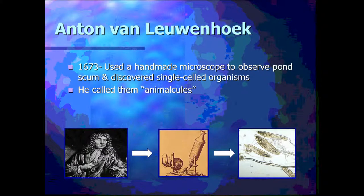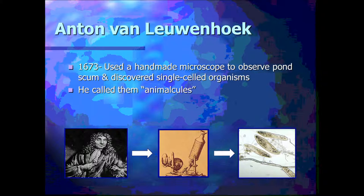The next person is Anton van Leeuwenhoek. The way I remember him is that his last name starts with an L, and I pair it with the word 'living,' which also starts with an L — because he was the first person to actually view living cells under a microscope. In 1673, he used a handmade microscope to observe pond scum and discovered single-celled organisms, which he called 'animalcules.' We give these single-celled organisms a name today, and I'm going to show you a video of what they look like.